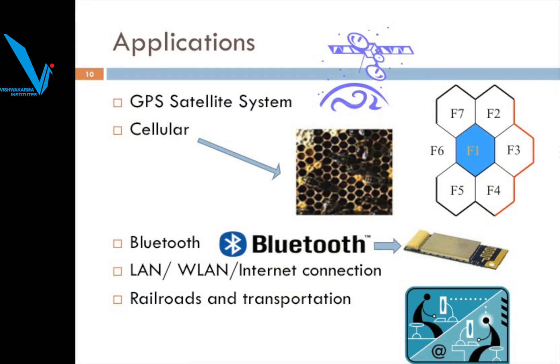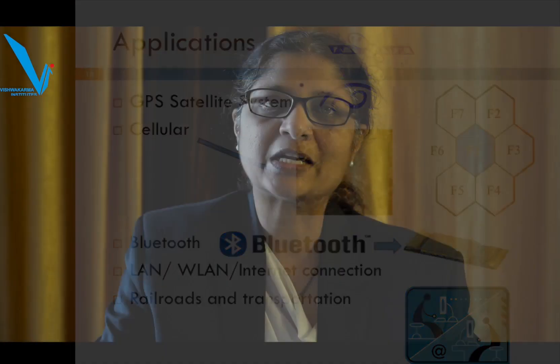Different applications where spread spectrum techniques can be used include GPS satellite systems, cellular communication, Bluetooth, LAN, WAN, internet connections, railroads, and transportation. This spread spectrum technique can be used in all these applications for spreading the information signal, so as to maintain high security and achieve secure data at the output.